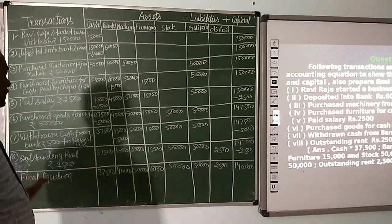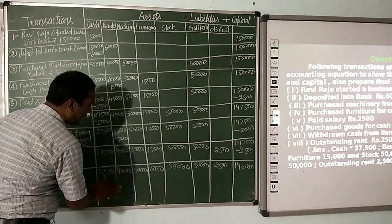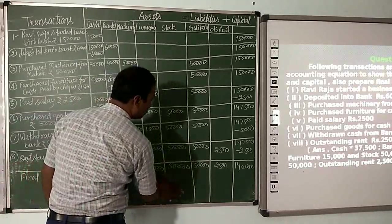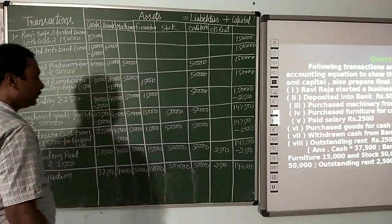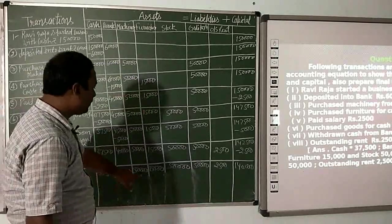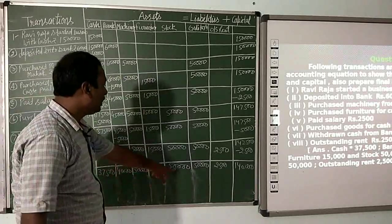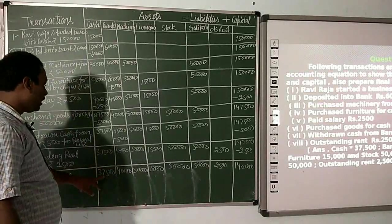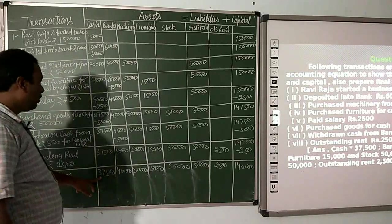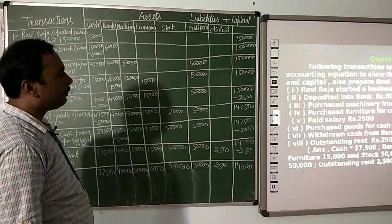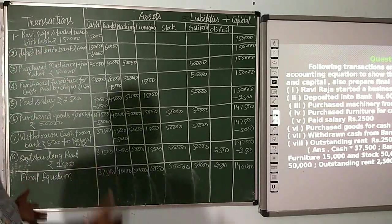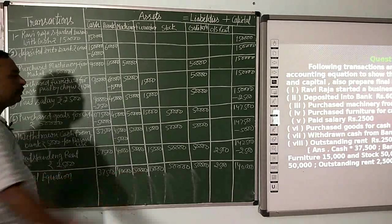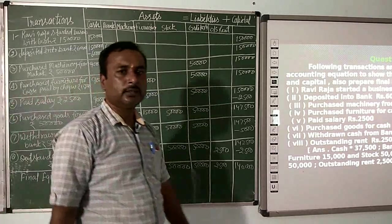अब इसको add करेंगे: bank 40,000, machinery 50,000, total assets = 1,92,500। Asset is equal to liability plus capital। अब balance sheet बनाएंगे। Total asset is equal to liability plus capital।